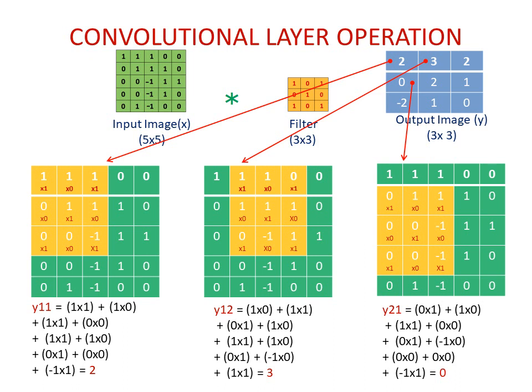For one more example: to find the (2,1) element, you superimpose this filter onto the input image such that (1,1) of the filter is superimposed on (2,1) of the input image, and (1,2) of the filter is superimposed on (2,2) of the input image, and so on as shown in the bottom-right figure. Element-wise multiplication and sum of all values produces 0. Similarly, you can find (2,2) as 2 by shifting one right, (2,3) as 1, (3,1) as −2, (3,2) as 1, and (3,3) as 0. This is the convolution operation.